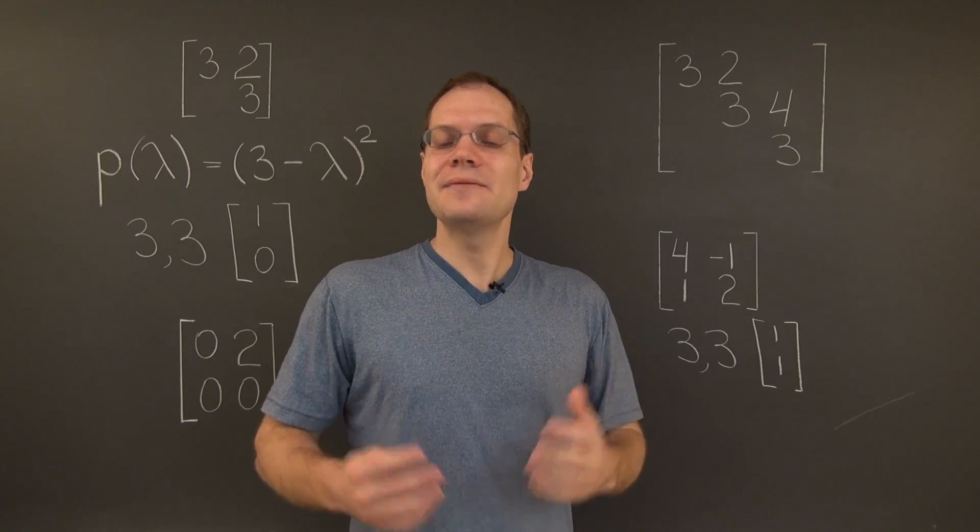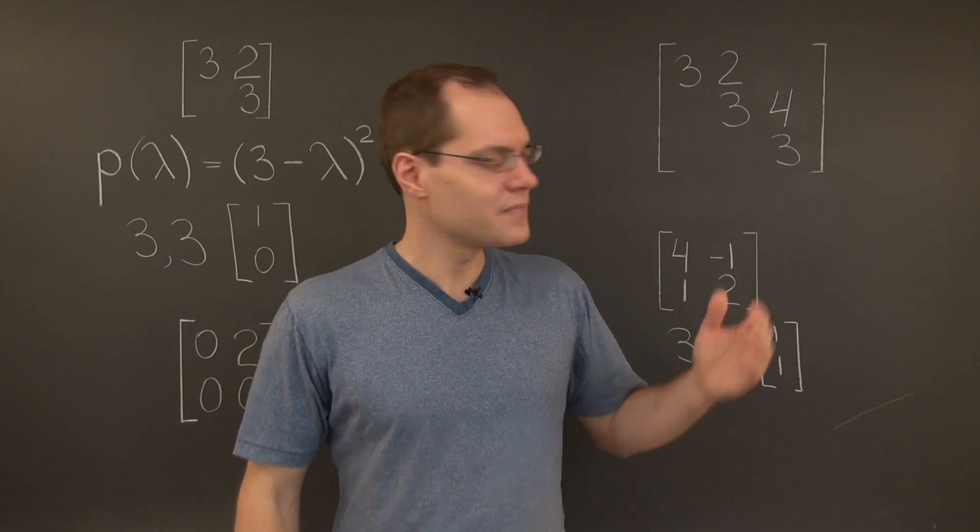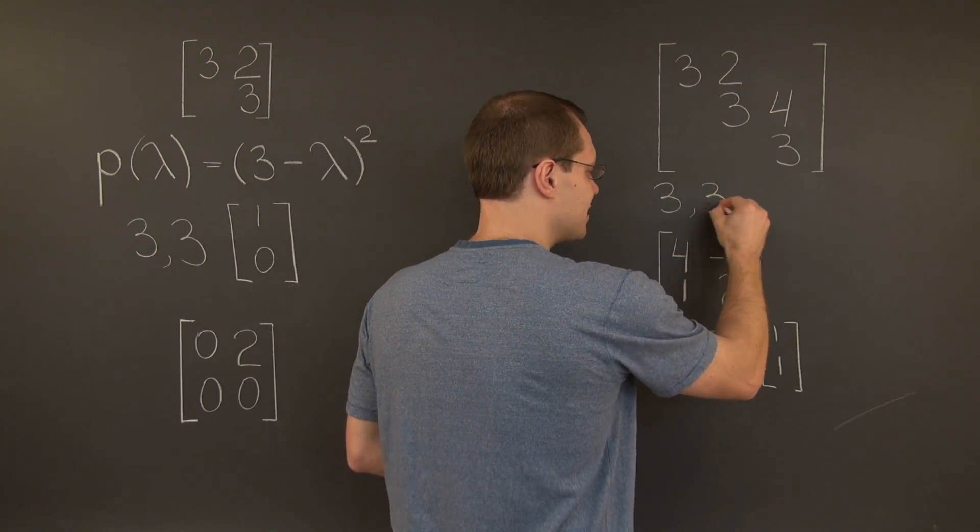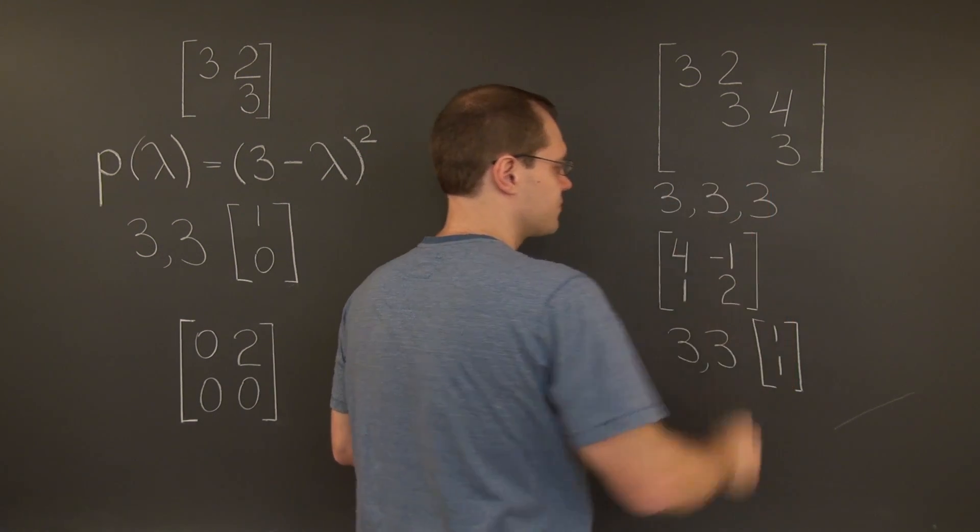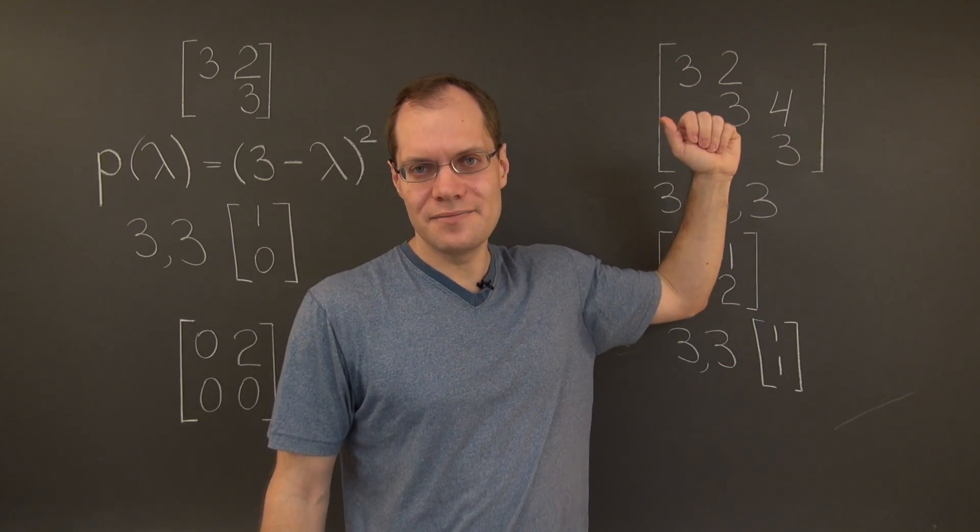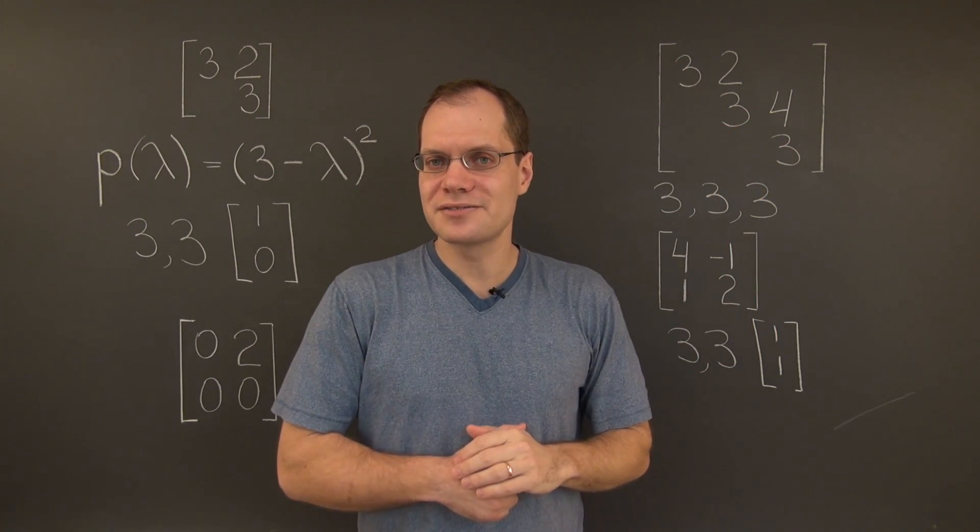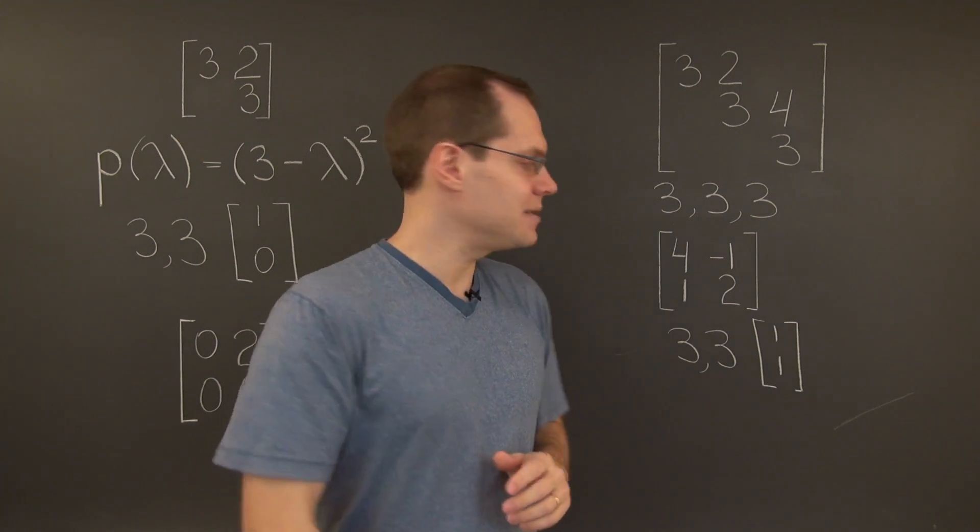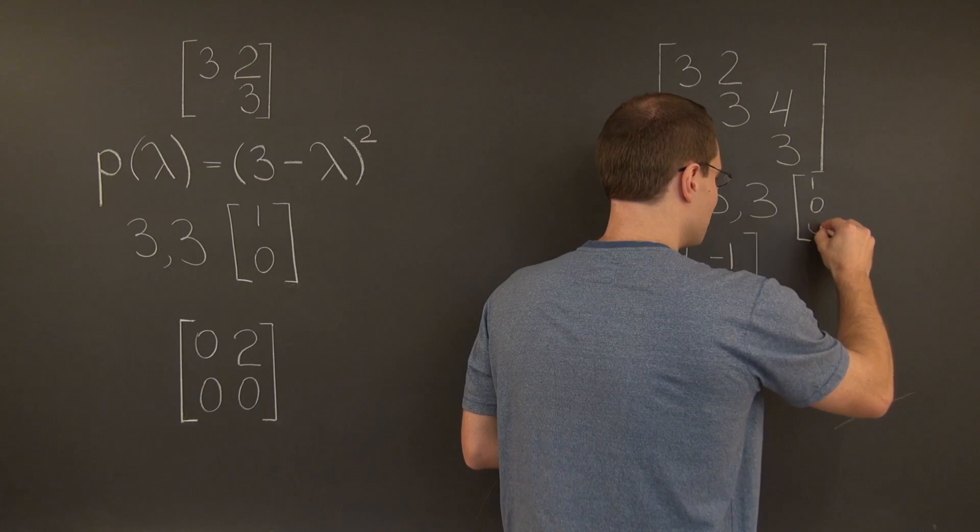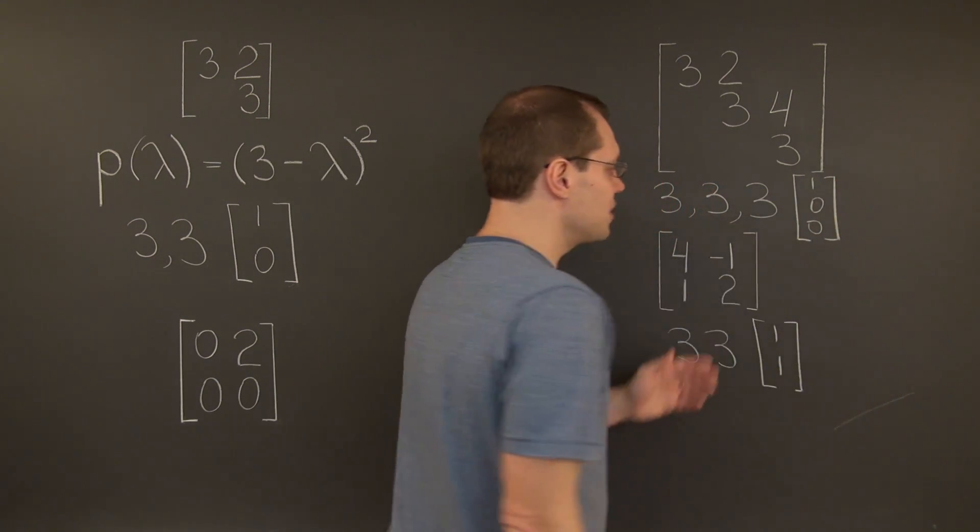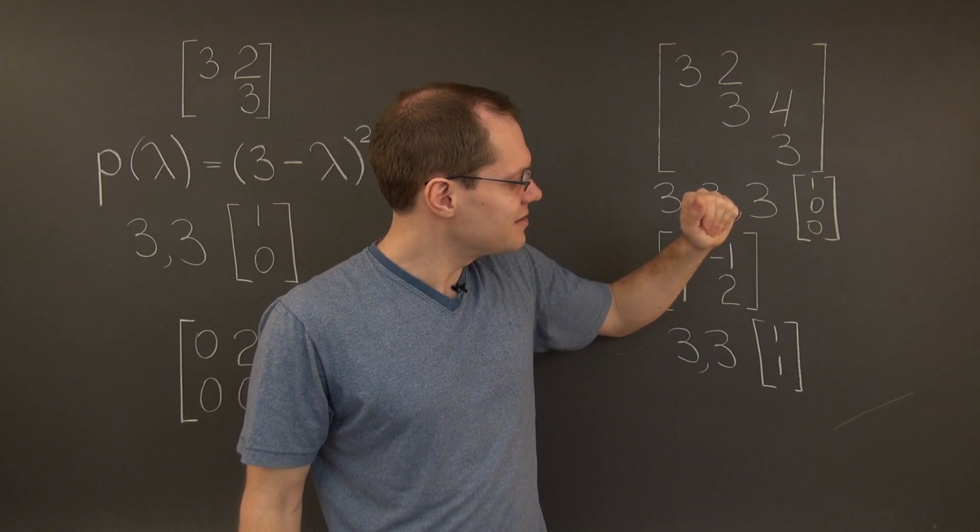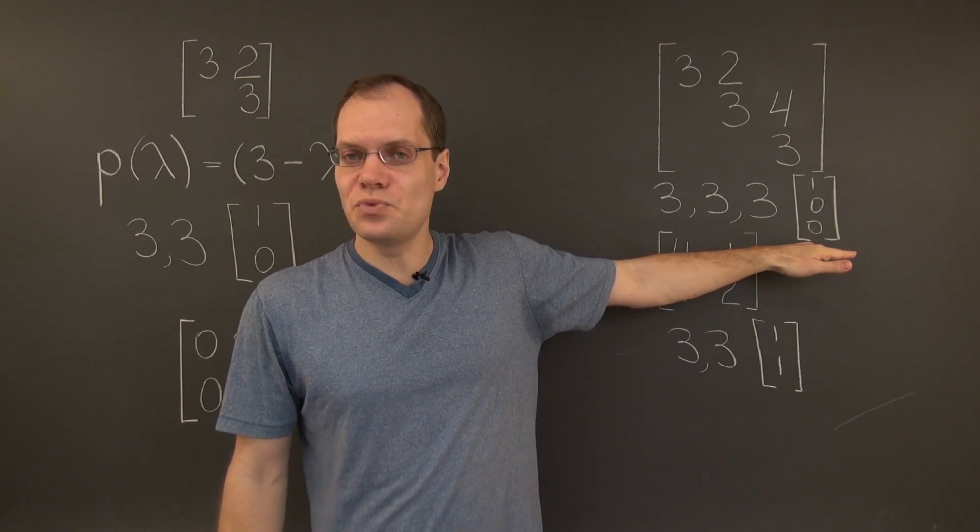And this matrix demonstrates it. The defect can be as large as you want. In the case of this matrix, as we already mentioned, 3 is a triple eigenvalue. Yet, if we visualize subtracting 3 from the diagonal, we'll be left with a matrix, whose null space is still one-dimensional, represented by the vector 1, 0, 0. And once again, what vector it's represented by is not important.